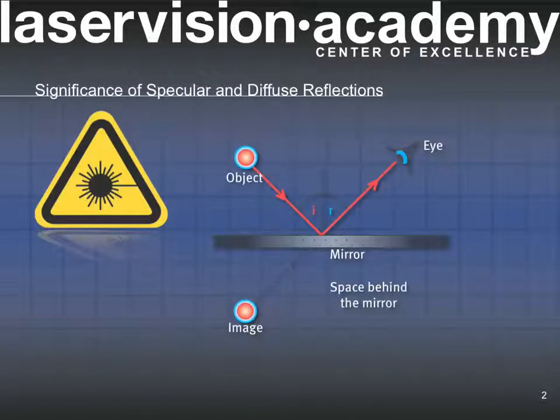When light strikes a surface, some or all of it may be reflected, and the reflected rays will satisfy the law of reflection: angle of incidence equals the angle of reflection.